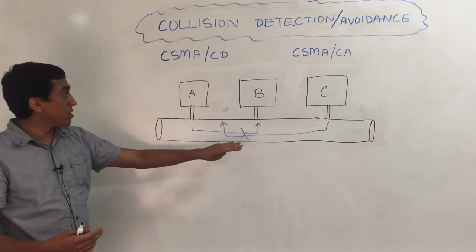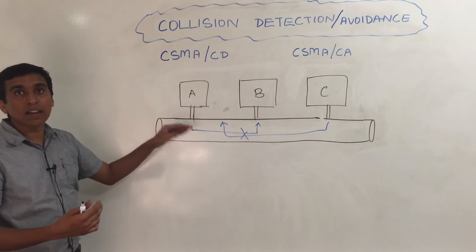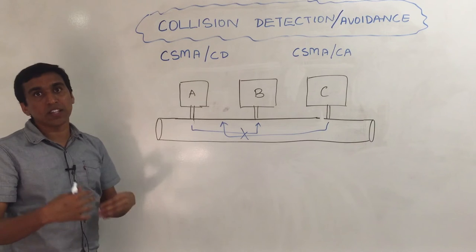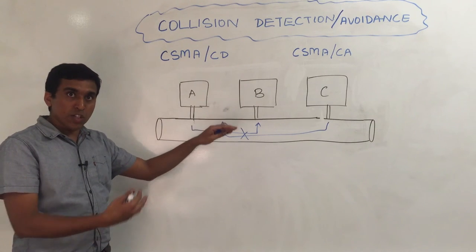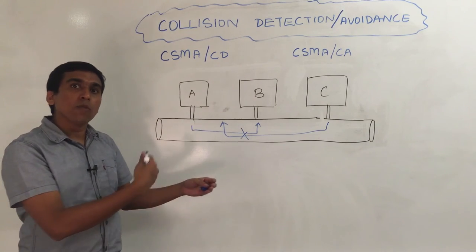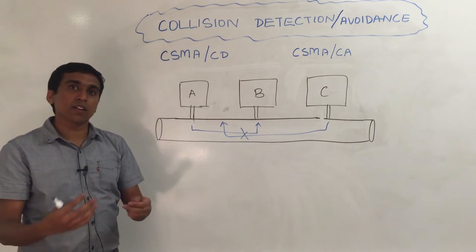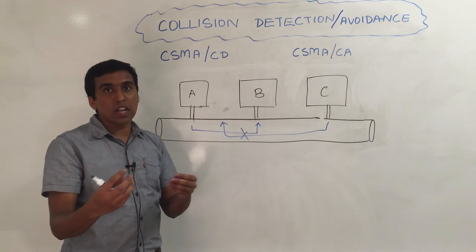When there is a collision that happens, A detects it and backs off before it tries to send the message back to B again. This was in the original days of networking, but later what happened is they added the concept of collision avoidance.